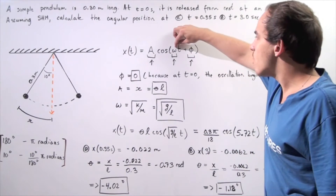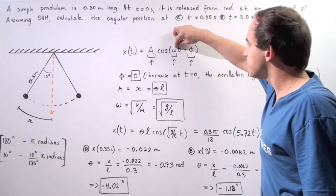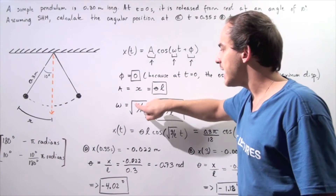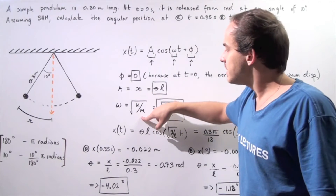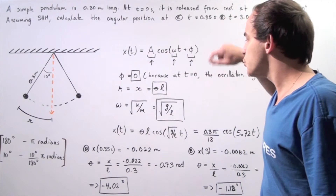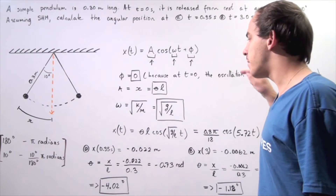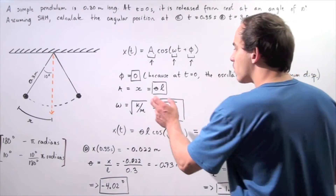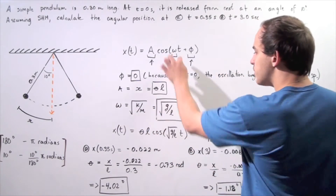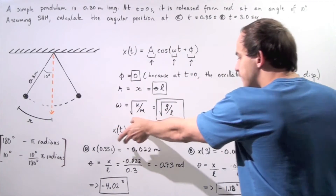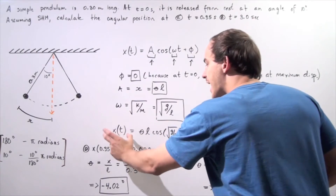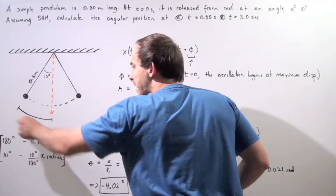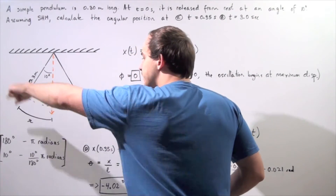What about our omega — our angular frequency? Recall that angular frequency is equal to the square root of k divided by m. Because k equals g times m divided by l, we plug that in for k and get the following result: omega equals the square root of g divided by l. So our omega is replaced with this quantity, giving us our equation for the displacement of our pendulum as it swings back and forth.